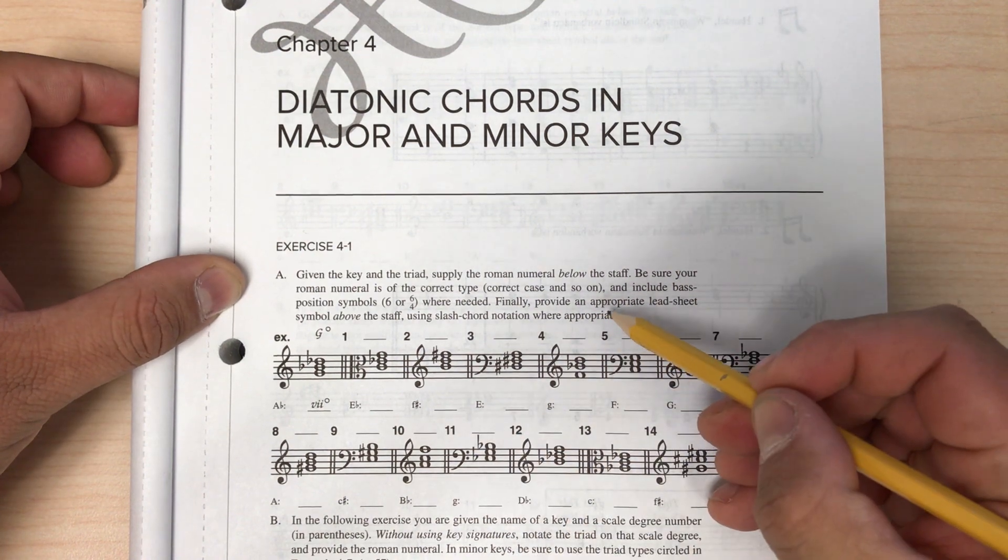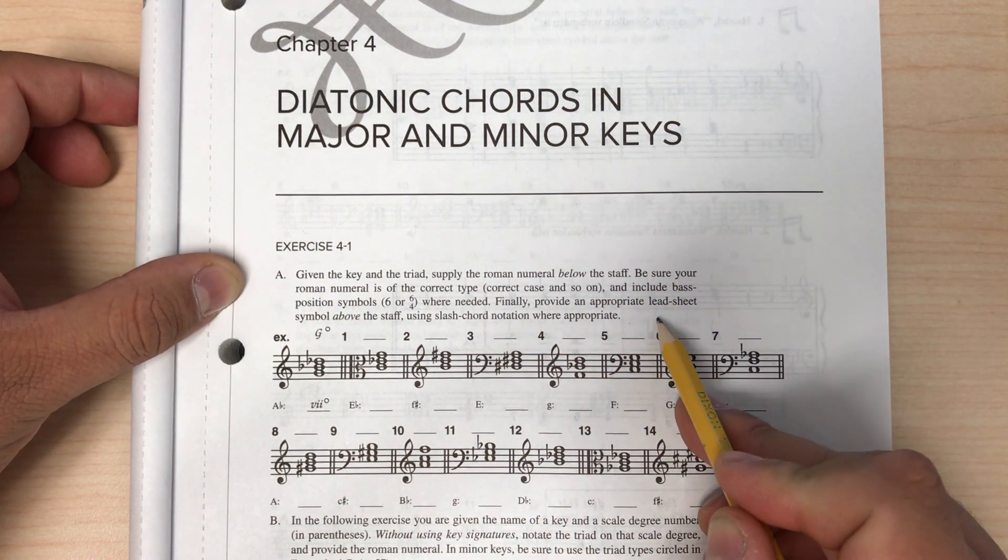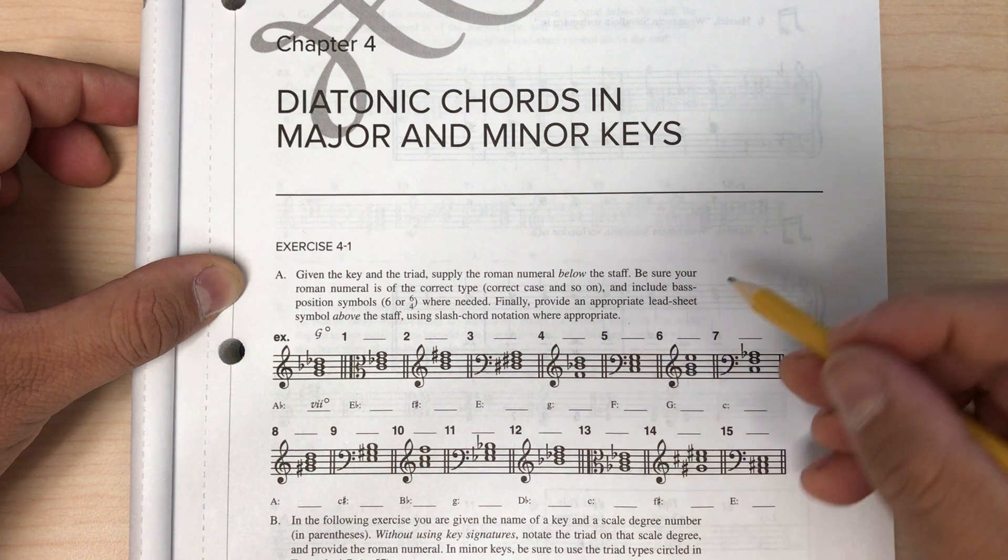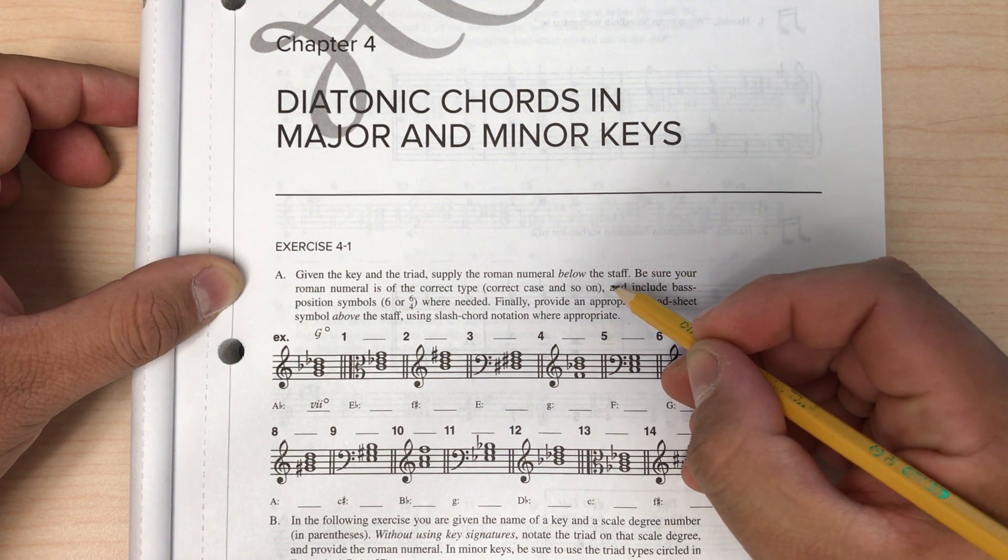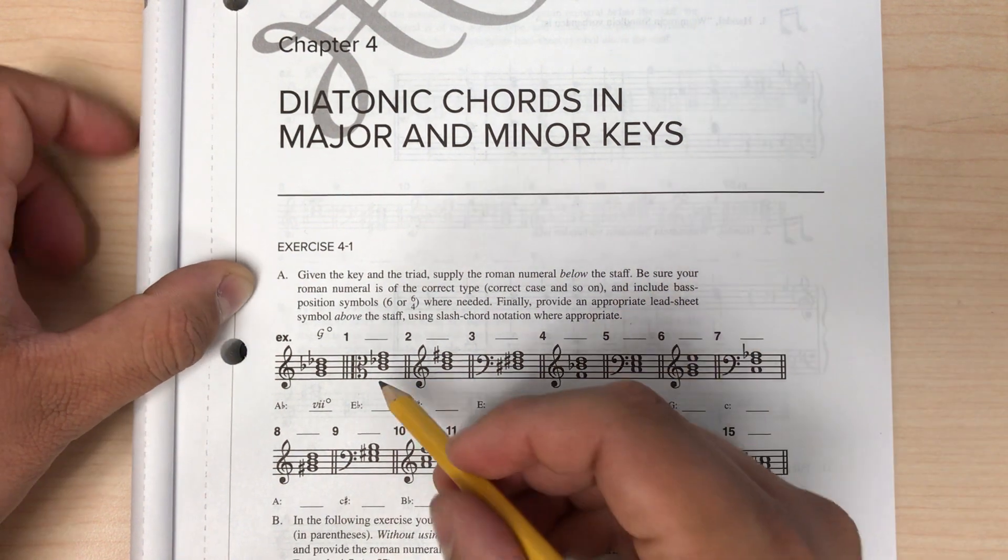So actually, we're going to do this in reverse. We're going to find the lead sheet notation first, then we're going to supply the Roman numeral. So let's look at this first one.